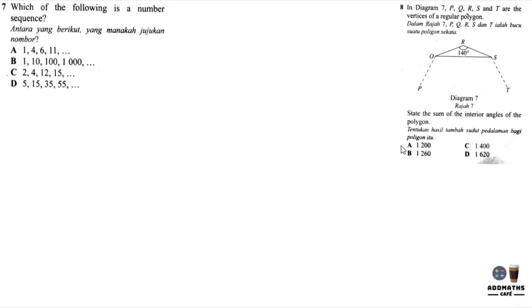Next, Question 7: Which of the following shows a number sequence? We need to determine all the number sequences one by one. 1 to 4 is plus 3, but then go to 6 is plus 2, and then go to 11 is plus 5. Do you see a number sequence? No. For B, 1 to 10 to 100 to 1000, all this is by times 10. We can see a sequence.